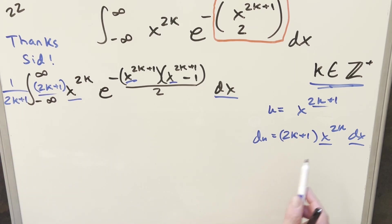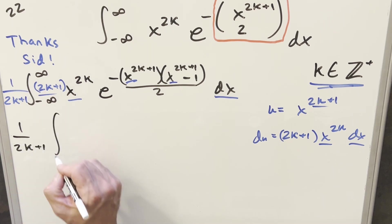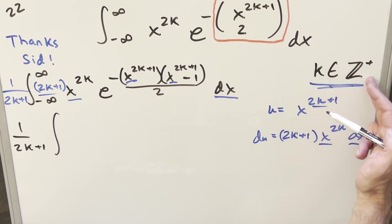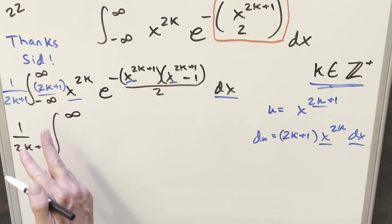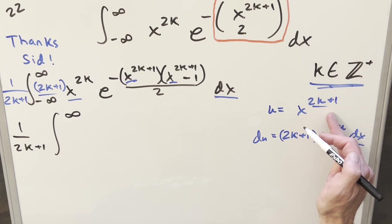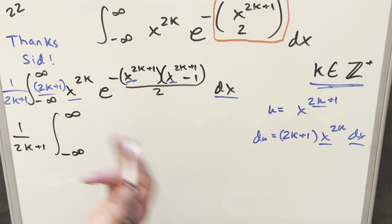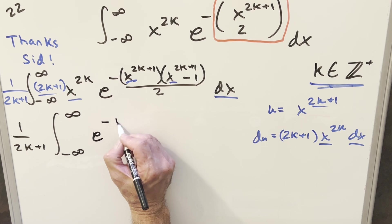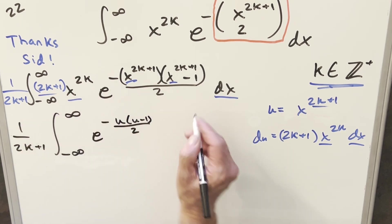Now we have our full du value, so let's substitute. We'll have 1 over (2k+1) in front and update our bounds. When you plug in infinity for x, since k is positive, this goes to infinity. When you plug in minus infinity, since 2k+1 is always odd, we still have minus infinity here — if it were even, you'd go from infinity to infinity, which is a totally different problem. The exponent simplifies to e to the minus u times (u minus 1) over 2, with du.